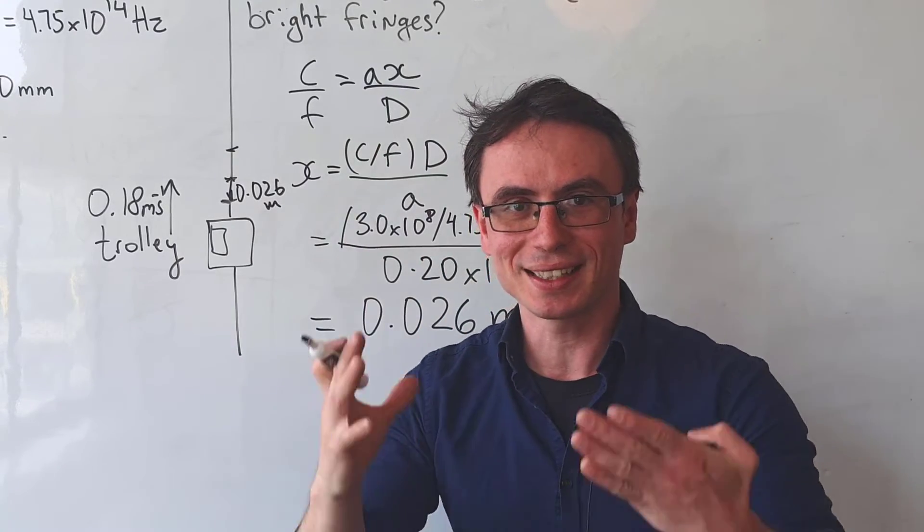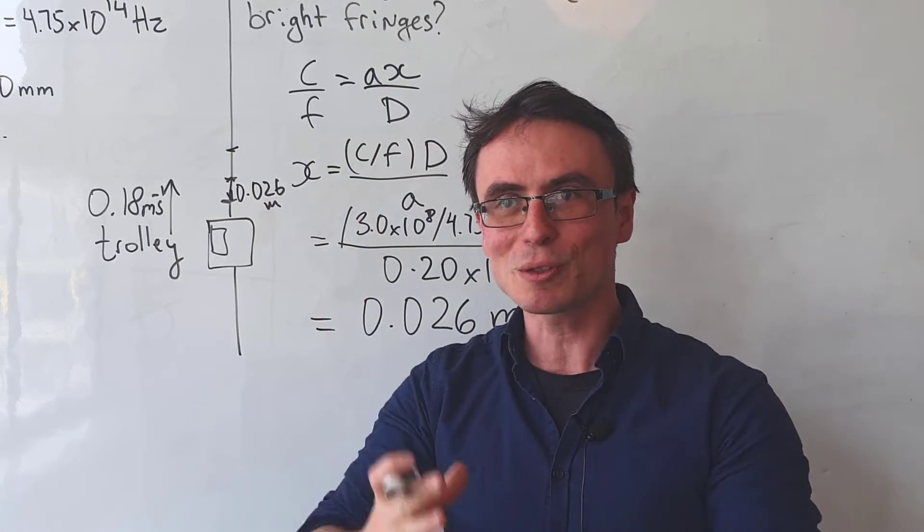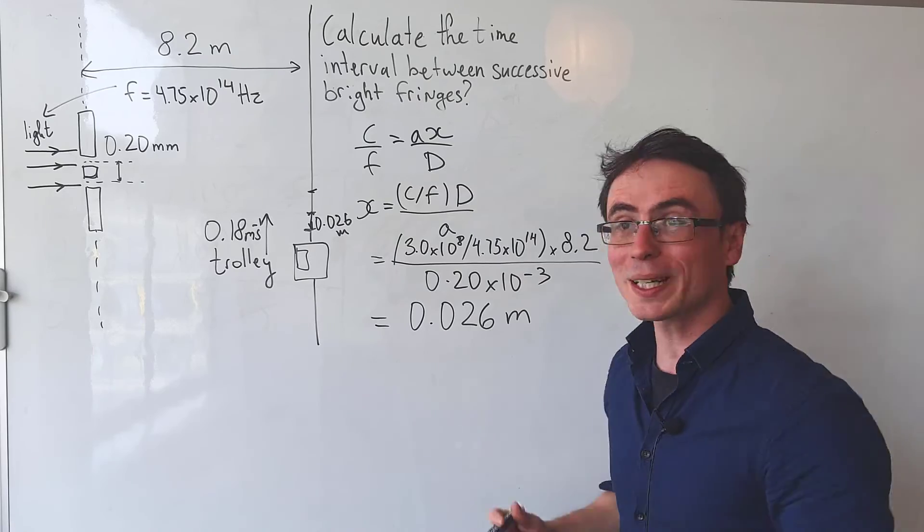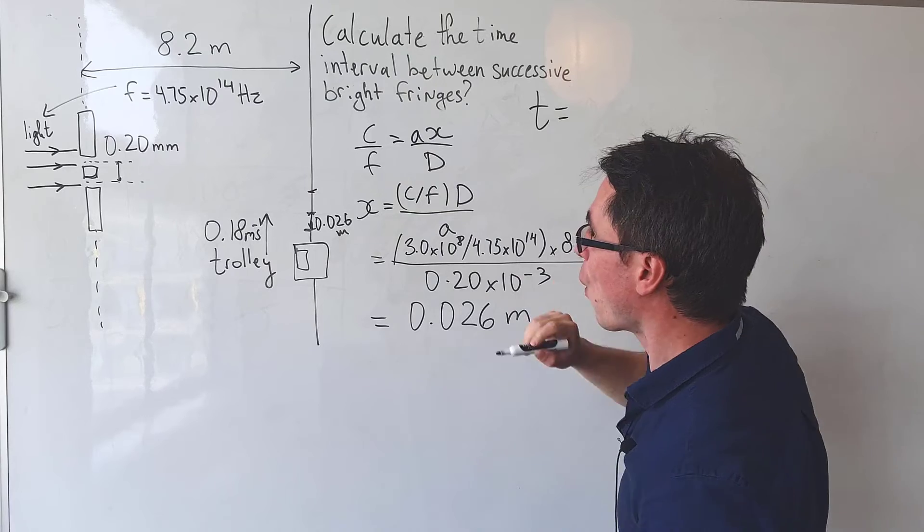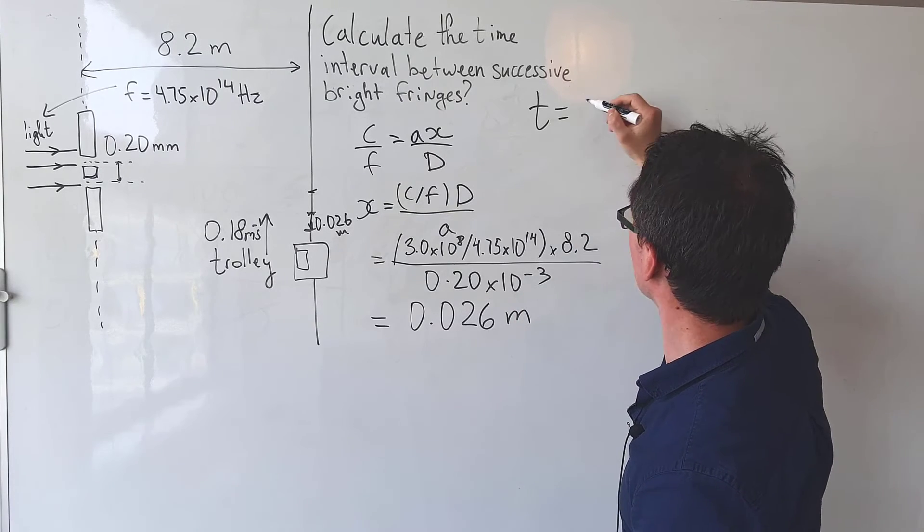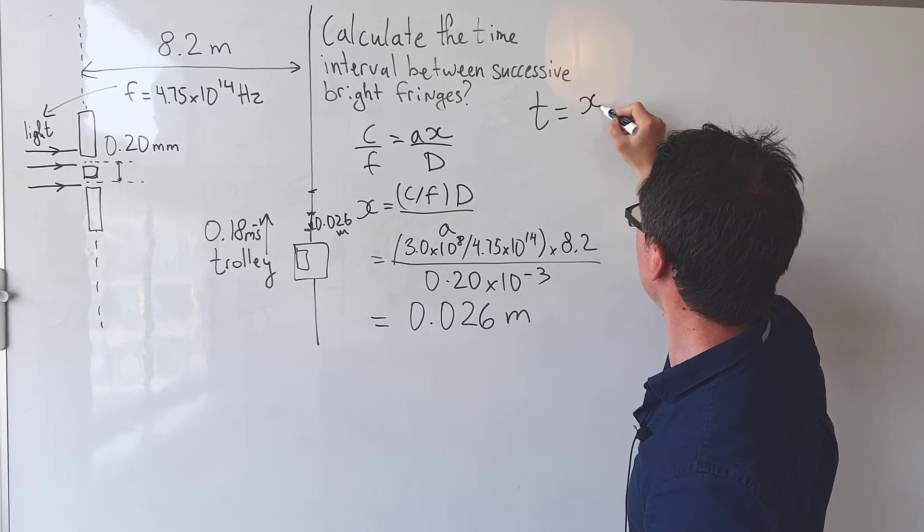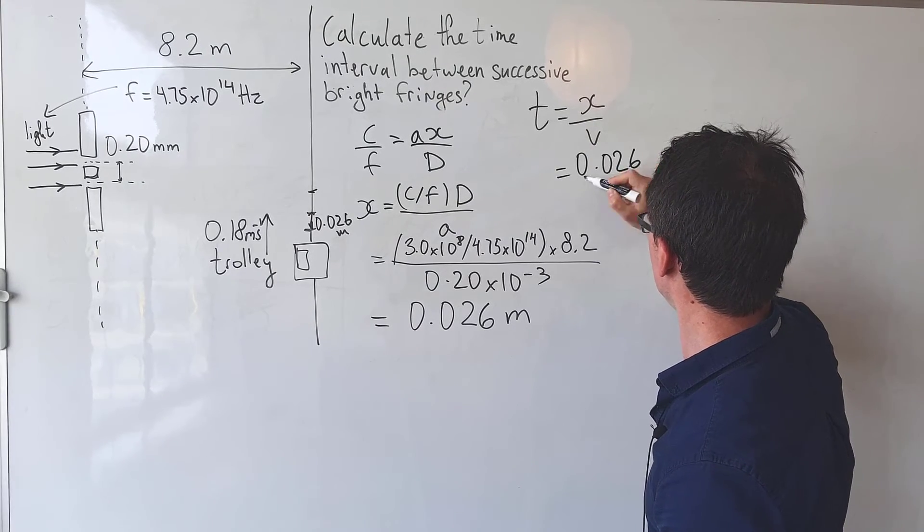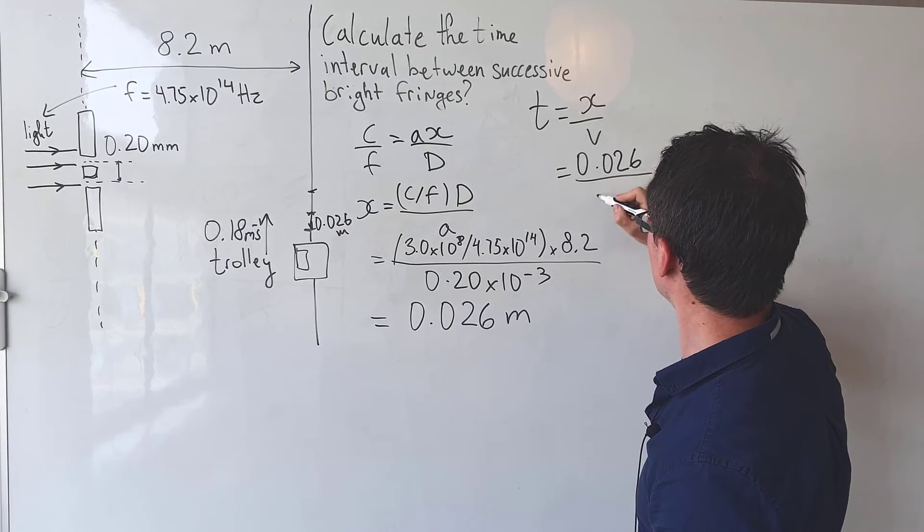So we can just simply use the fact that this distance is equal to speed times time, assuming that the speed is constant. So to work out this time t, all we need to do is take those two distances and divide them, so it'll be x over the speed which will be around 0.026. I'm going to divide that by the speed which is 0.18.